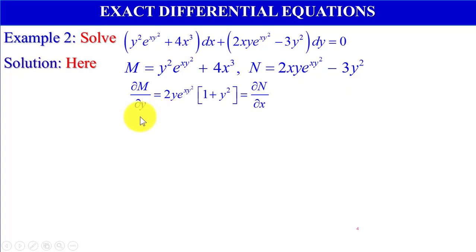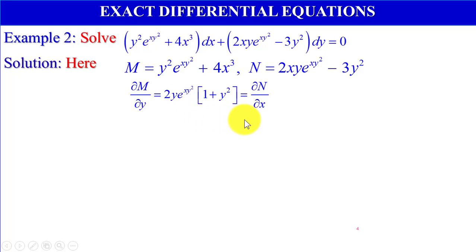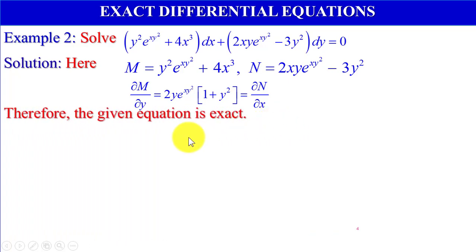Therefore, del M by del y equals 2y times e to the power xy squared times (1 plus y squared), which equals del N by del x. Therefore, the given equation is exact because del M by del y equals del N by del x.